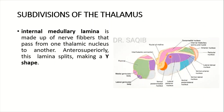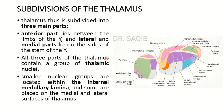Anterosuperiorly this lamina splits and forms a Y shape. The thalamus is thus subdivided into three main parts: the anterior part, which lies between the limbs of the Y; the lateral part; and the medial part. These lie respectively on the sides of the stem of the Y - here is the medial side and this is the lateral.